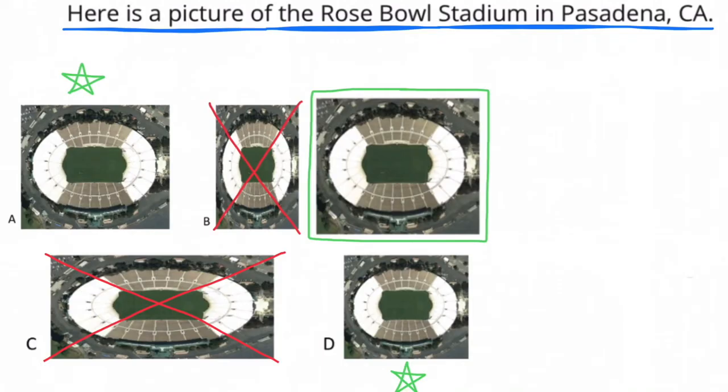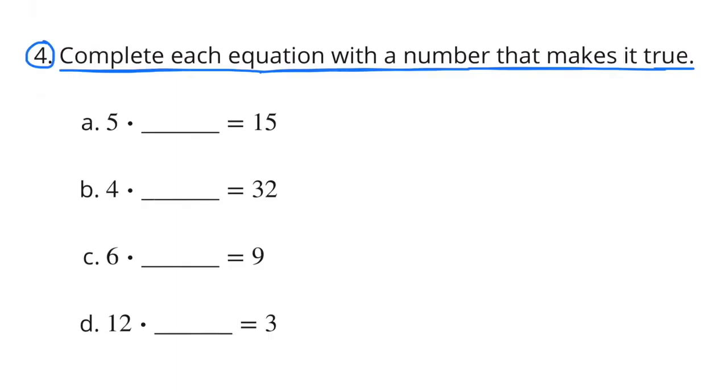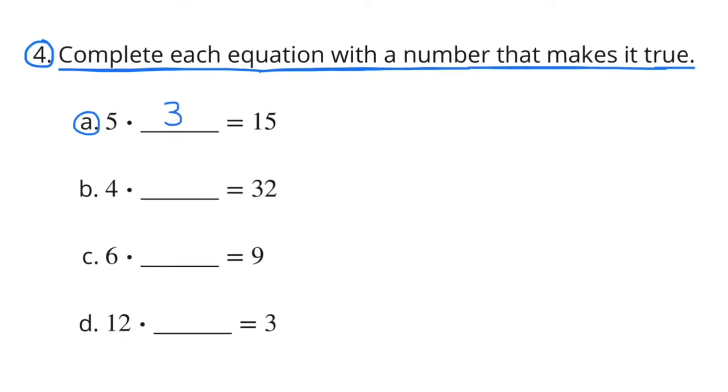Number four: Complete each equation with a number that makes it true. A: 5 times what number equals 15? 5 times 3 equals 15. B: 4 times what number equals 32? 4 times 8 equals 32.